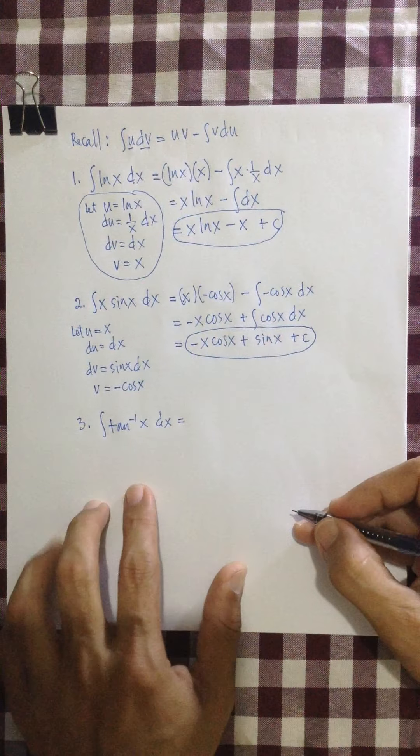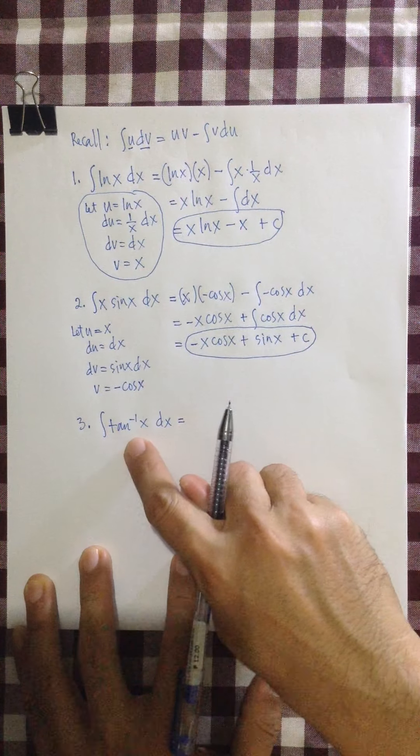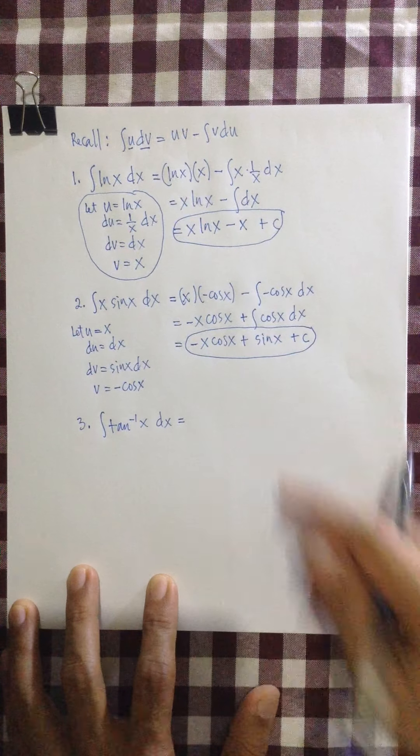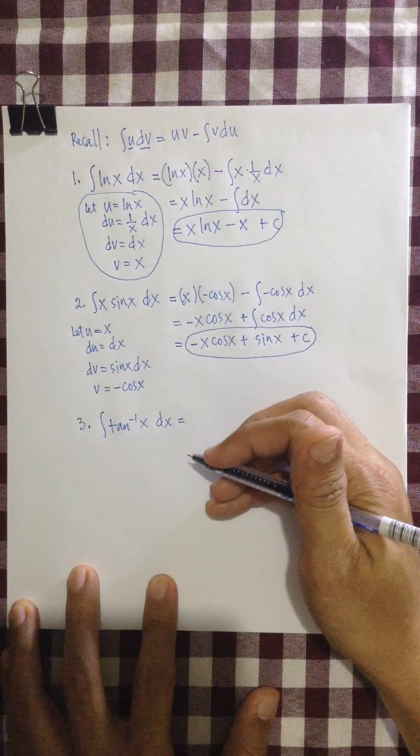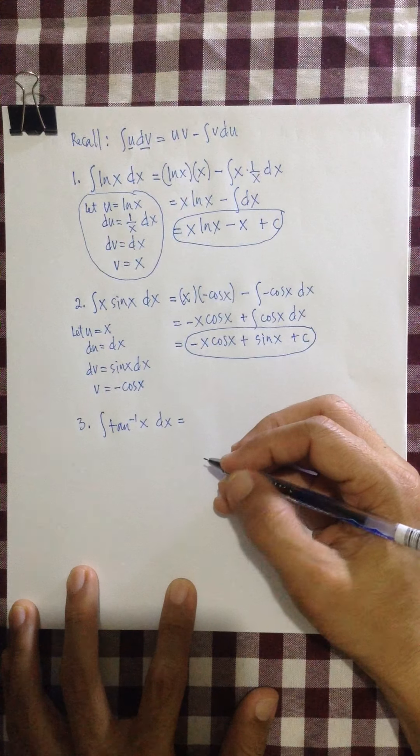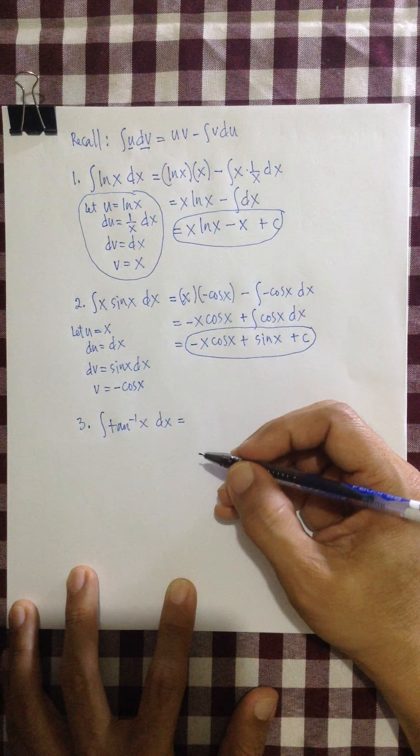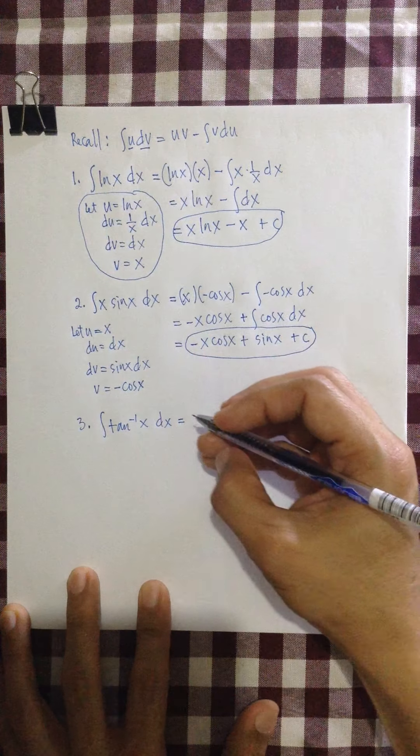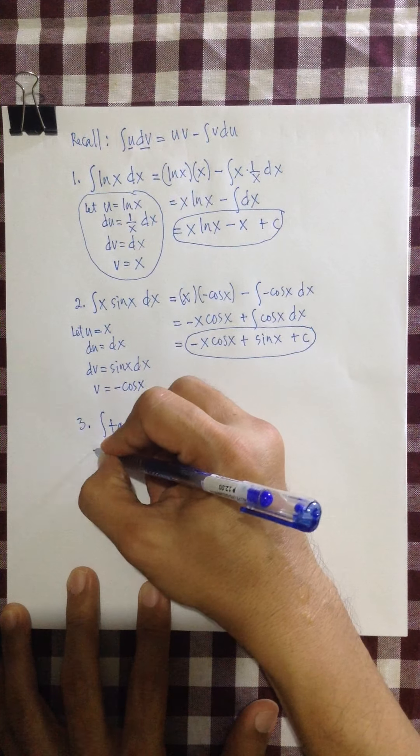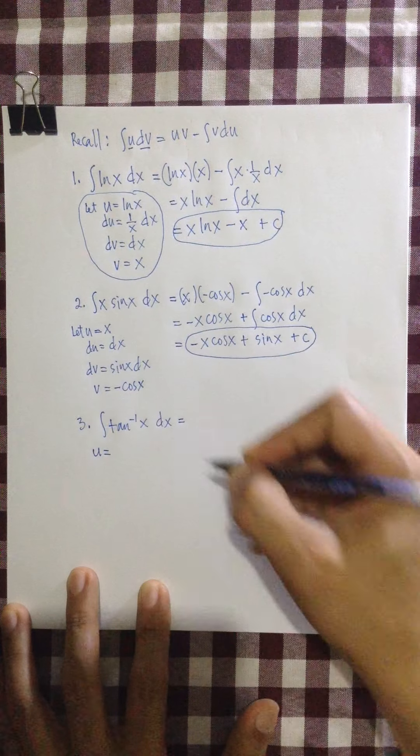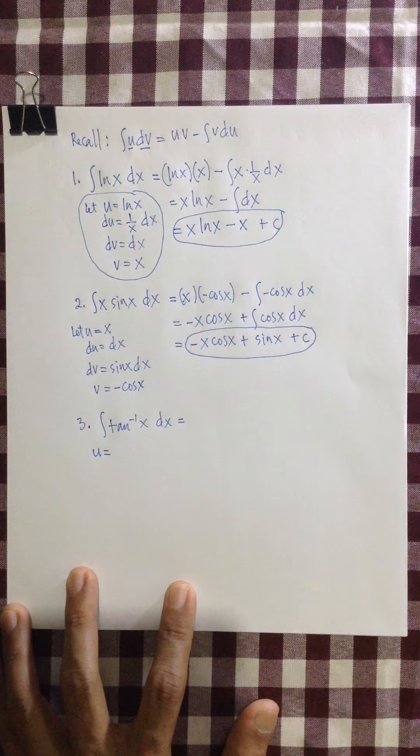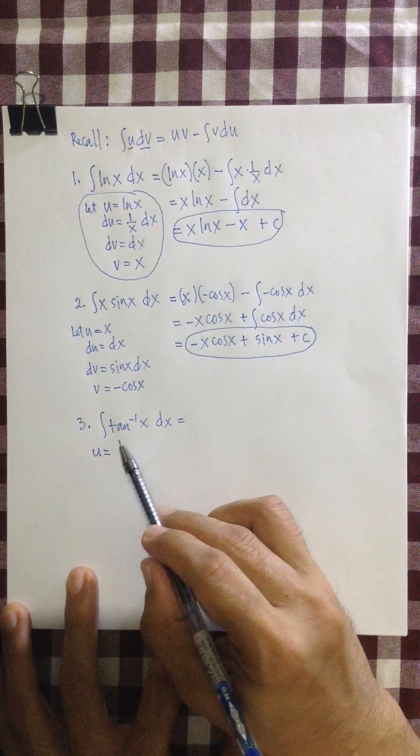This is another function which cannot be evaluated. The integral cannot be evaluated using the basic integration formulas that we have previously. So we can evaluate the integral of this by using integration by parts. Again, we decide for our u. Again, the acronym.